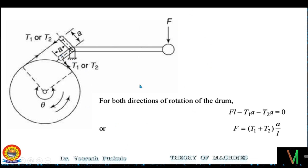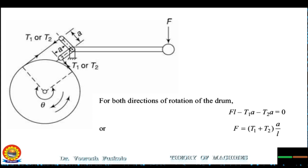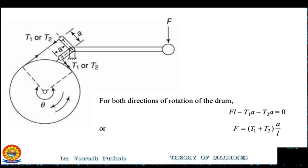The applied force for a two-way band brake will be (T1 + T2)·a / L. This is all about the differential band brake. I hope you have understood the various configurations, the equation of applied force P, and the conditions of self-locking. In the next lecture, we will solve numerical problems based on differential band brakes. In case of any doubts, feel free to contact me. Thank you.